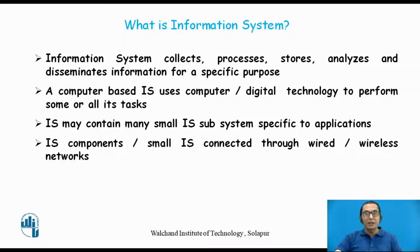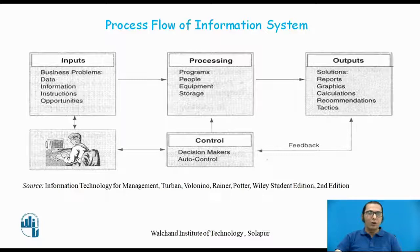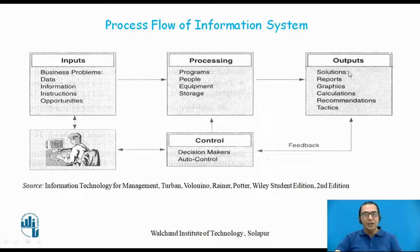An information system basically consists of many small subsystems, and these subsystems or components are connected through wired or wireless networks. That is the typical flow in an information system. We require an information system because we have a business problem to be solved — for example, the bank has to maintain my saving bank account. The input for the information system is the business problem, which is solved by people using programs, equipment, and storage, and then it generates output which is the solution to the problem.